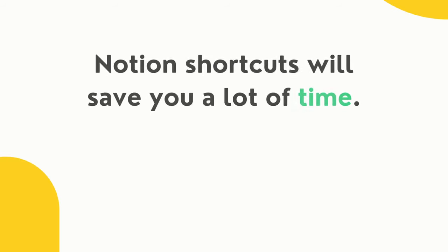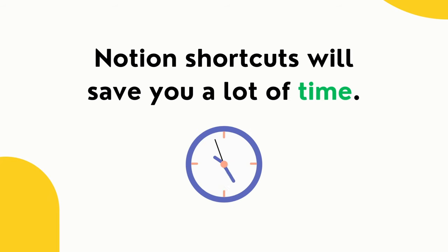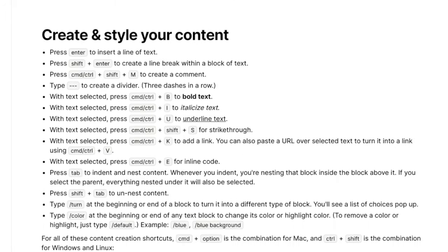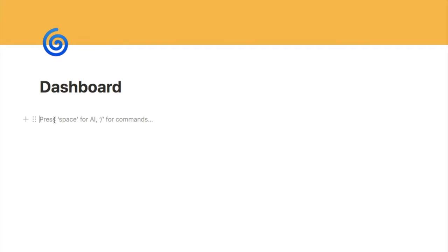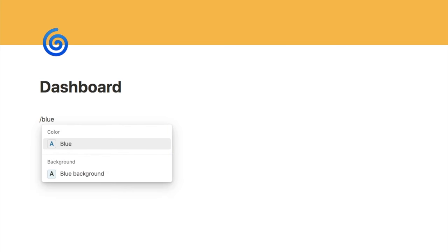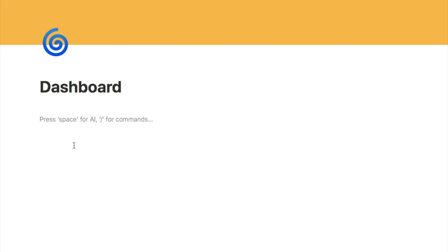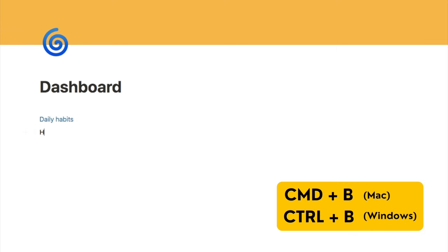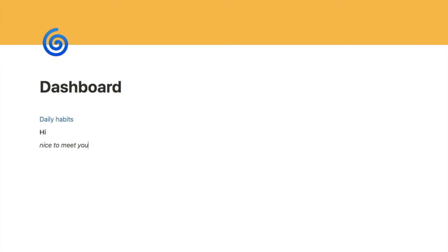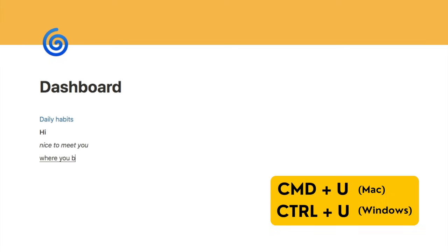Notion has a ton of keyboard shortcuts that will save you a lot of time. They have a post on their website which I'll link below. To quickly change your text color, type a forward slash and then the color you want — let's type 'blue' as an example. You can select either a blue text color or a blue background color. Let's go with blue text color, and as you start typing, the text is blue. You can use Command+B to bold text, Command+I to italicize, and Command+U to underline text.